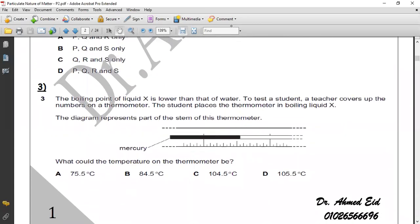Question three. The boiling point of liquid X is lower than water. Water boiling point is 100 degrees centigrade, so it's lower than 100 for liquid X. To test the student, a teacher covers up the numbers on this thermometer. The student places the thermometer in boiling liquid X, which is lower than 100. The diagram represents part of the stem of the thermometer. Let's say it's less than 100, so this may be 100, 50, and here 75 because it's less than 100. So it's 75.5 is the correct answer.